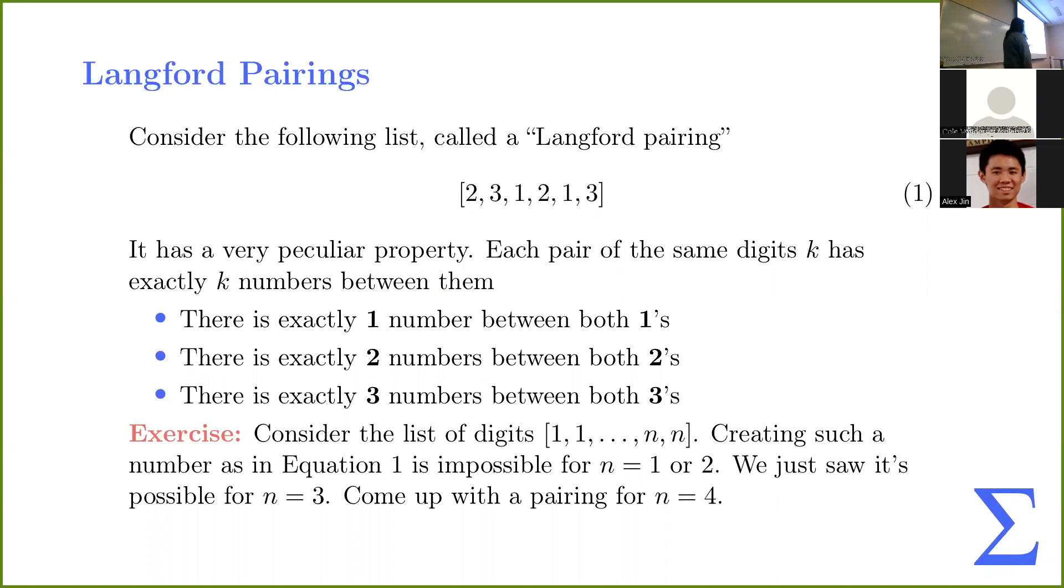So just to get a feel for it, I'll take maybe one or two minutes and see if you can come up with a pairing for n is equal to four. There are two of them. And then also, if you want to just follow along, slides should be uploaded. Answers to exercises should be uploaded. And also, there's source code for some of the exercises about programming. So source code is also uploaded.